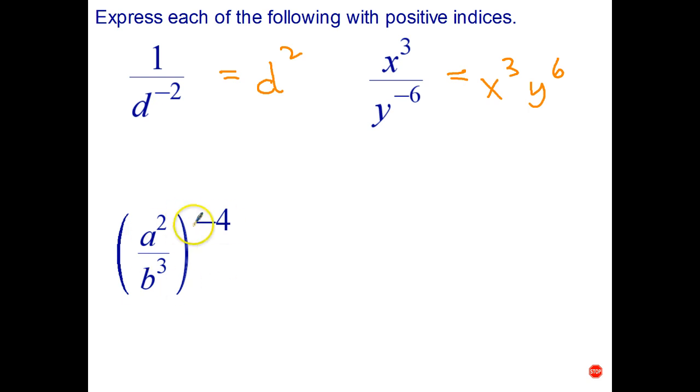Okay, this one here we have to do it in two stages. There's a couple of ways we could do it, but I'll start by removing the brackets. So a squared all to the negative 4 is a to the 2 multiplied by negative 4, which is negative 8. B cubed to the negative 4 is b to the 3 times negative 4, which is negative 12. So the first thing I did is I removed the brackets.